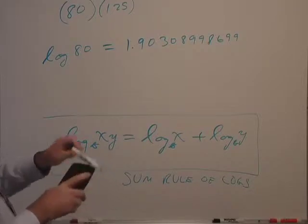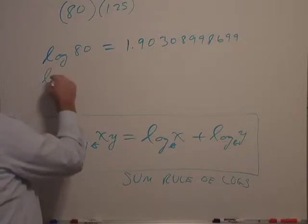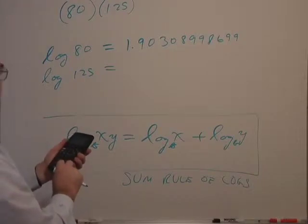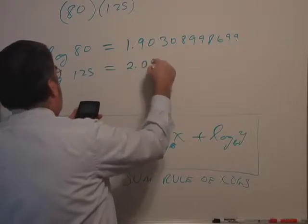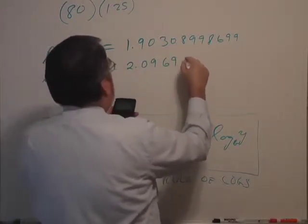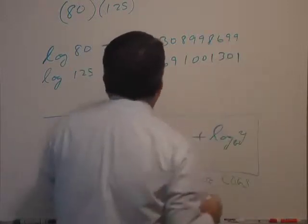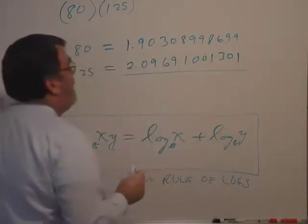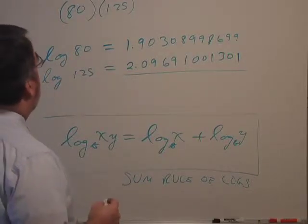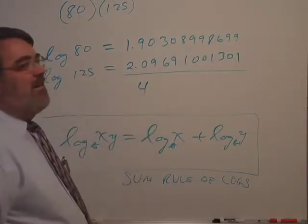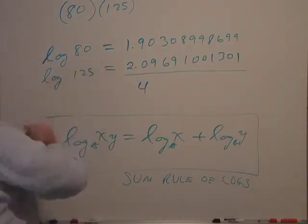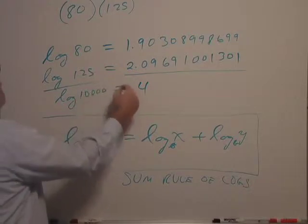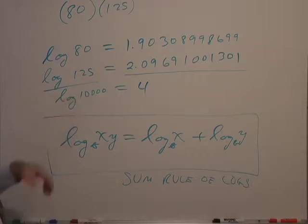And if I punch in the log of 125, we get log 125 is 2.09691001301. Now what happens when you add these numbers together? And you can check this out. Those add together to be exactly four.